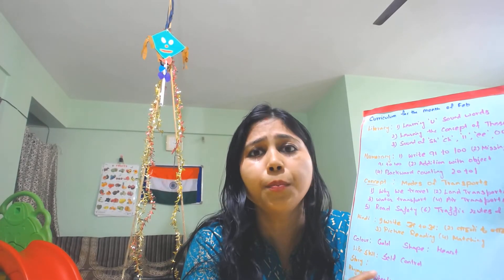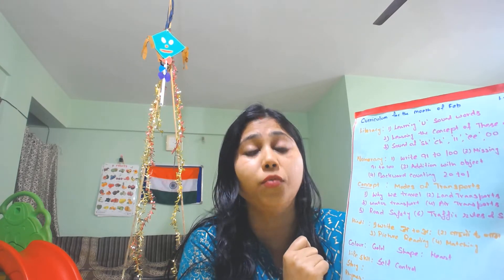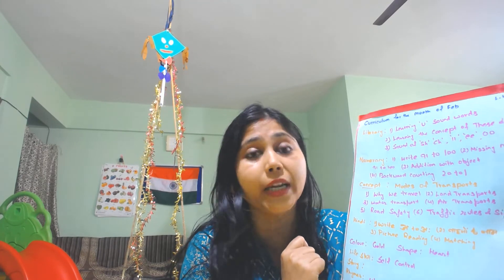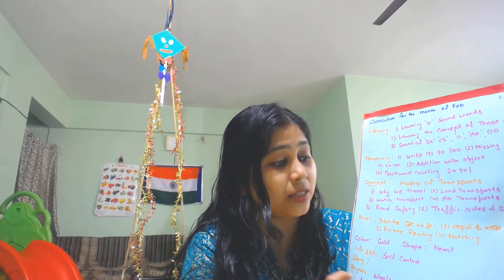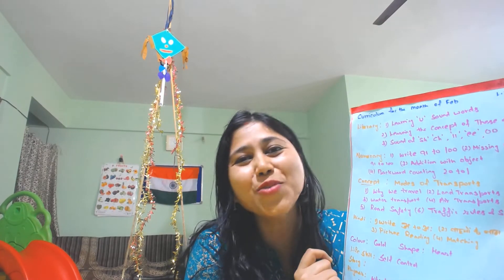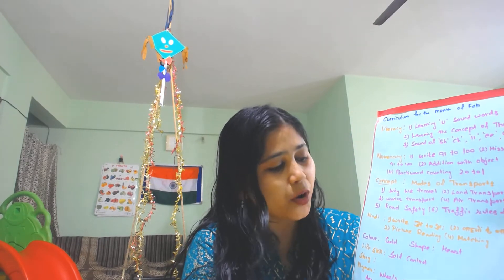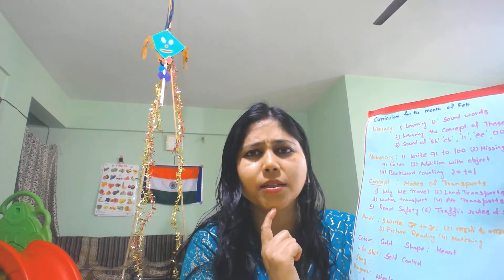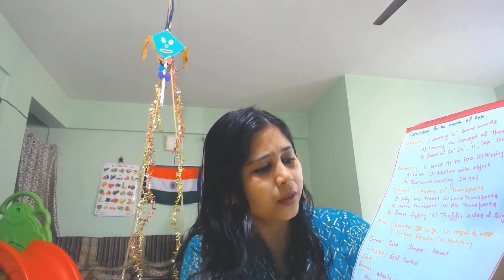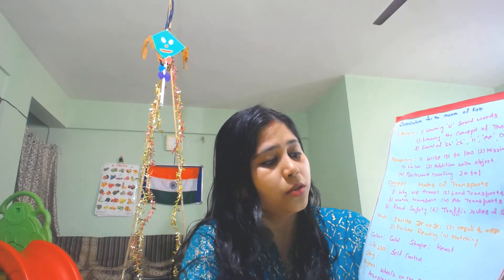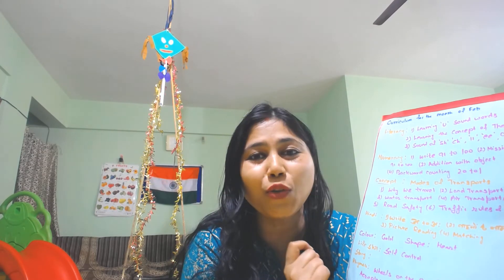The story of this month is the greedy dog story. We are going to learn the story of the greedy dog. And the rhymes of this month are: wheels on the bus go round and round, row row row your boat, aeroplane up in the sky, stop says the red, and shake and move song.